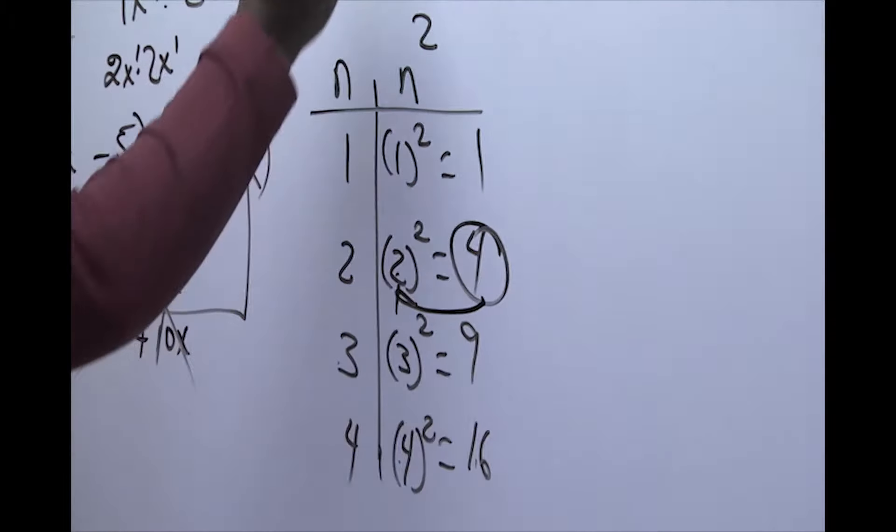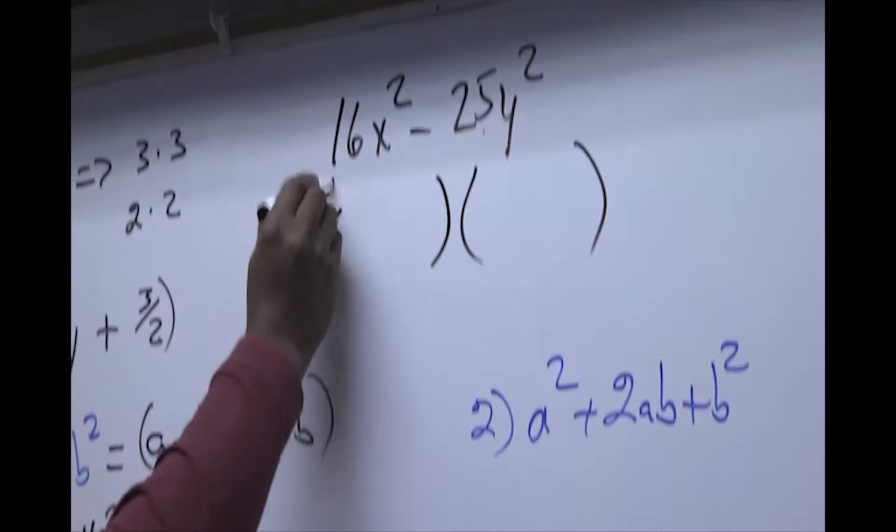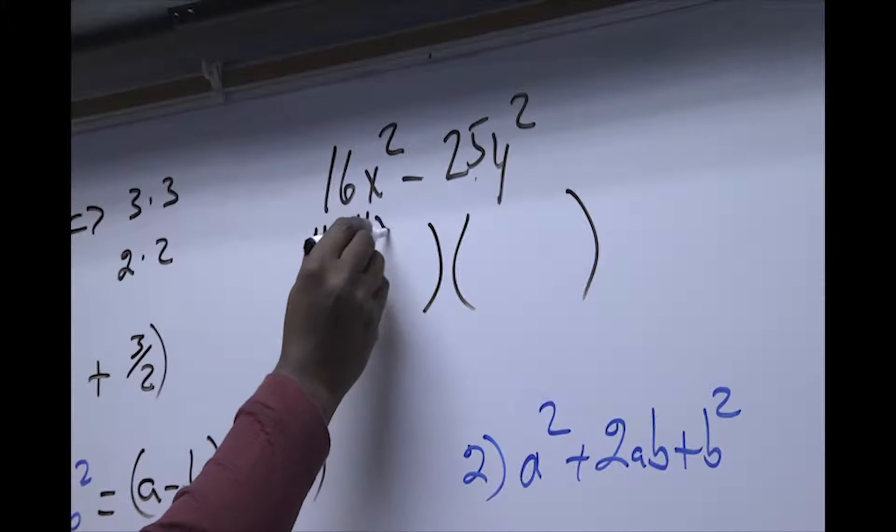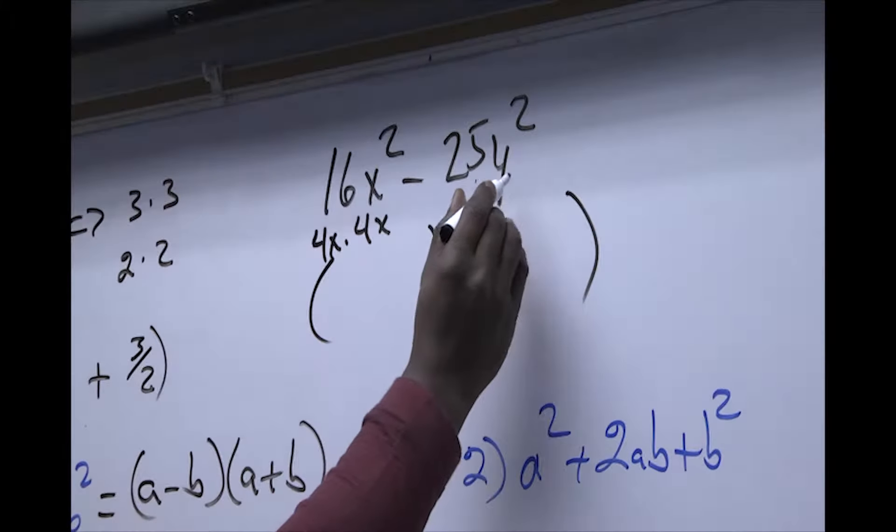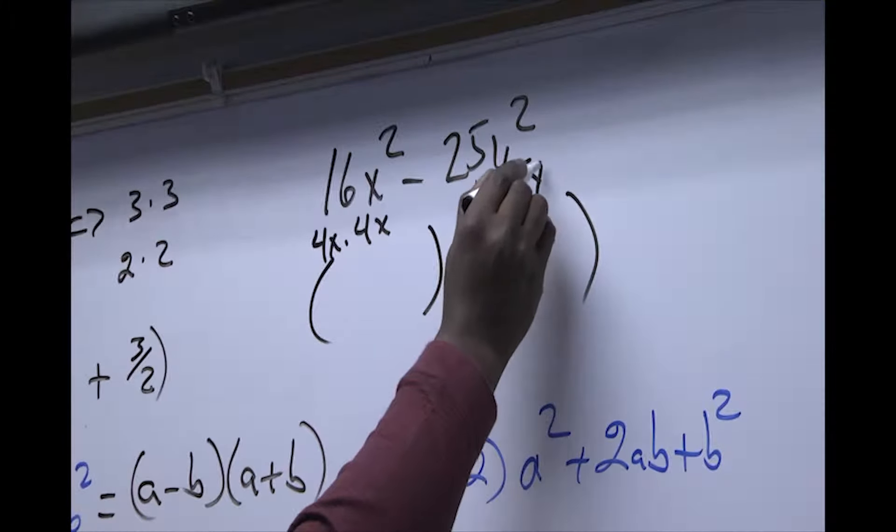So both of these are perfect squares. I am going to separate, we have 4x and 4x, and your 25 becomes 5y and 5y.